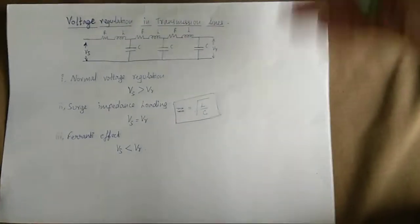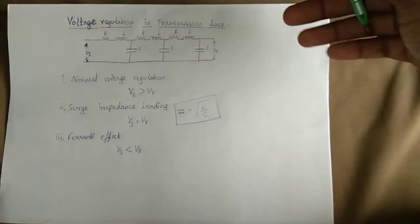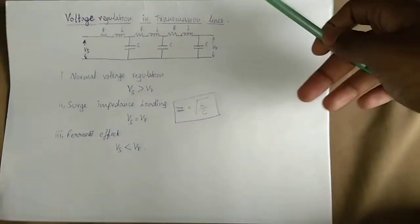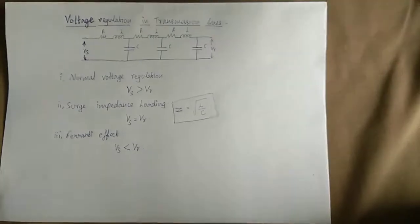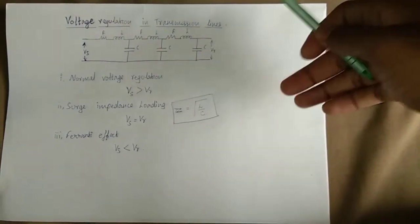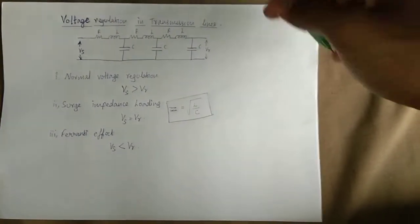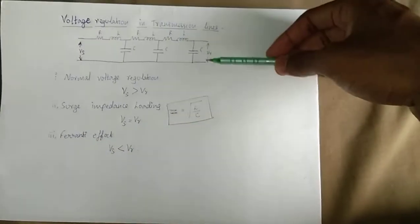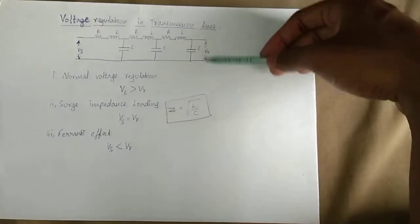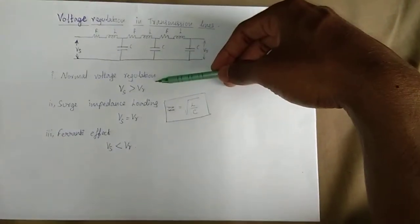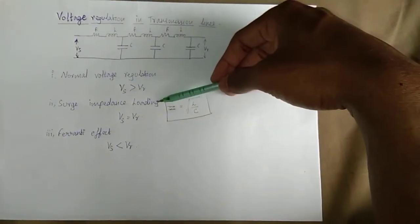We will talk about Household Appliances — we will talk about the Fan and Grinder. All of them are loaded. The regulation is less than the Sending End Voltage, so this is the Normal Voltage Regulation. It is very safe.